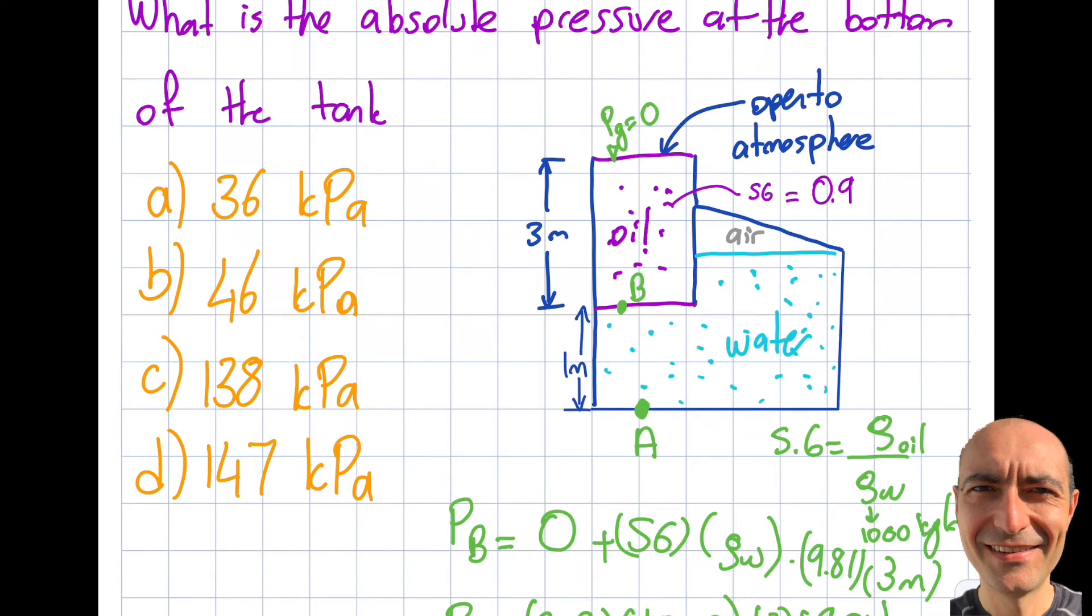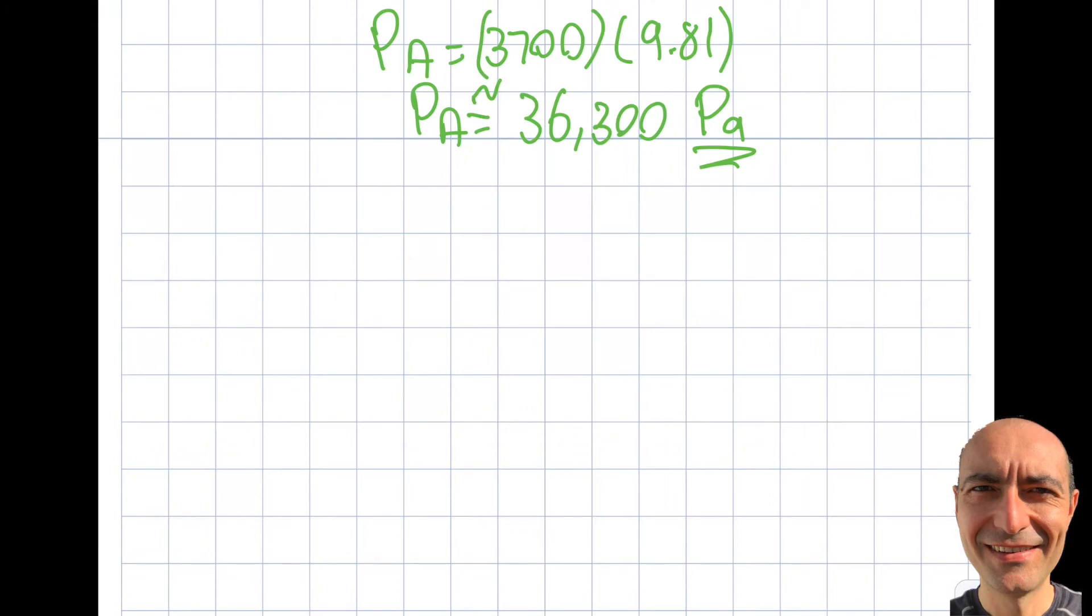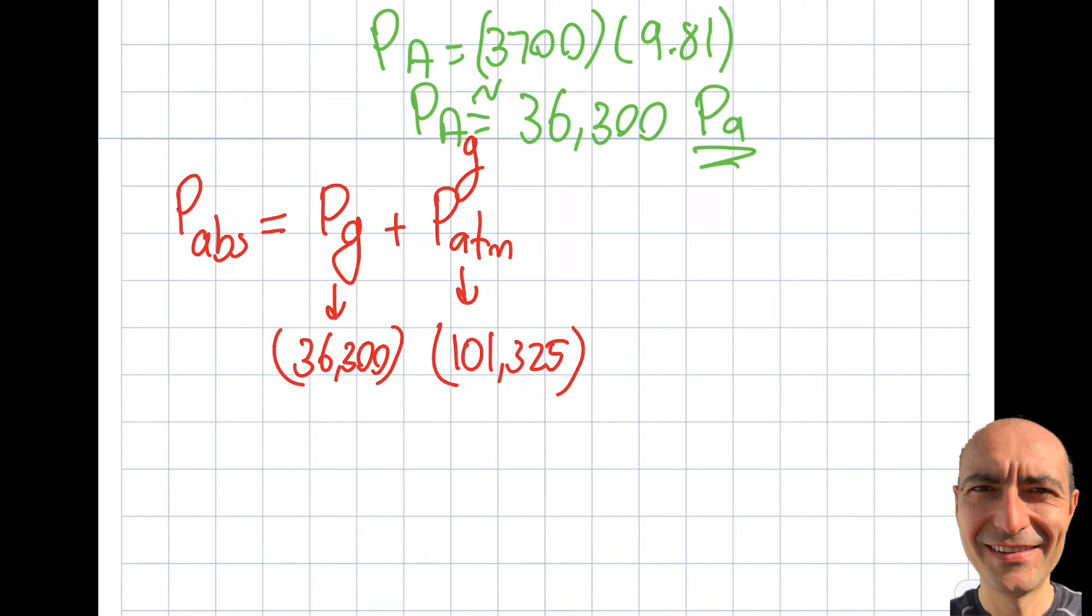It's asking for absolute pressure, so we forgot something. Looking at page 177 of the reference manual, the formula says P_absolute = P_gauge + P_atmospheric. This was in gauge terminology. So I simply add the atmospheric pressure of 101,325 Pascals. Punching this in gives my P_absolute as 137,625 Pascals.